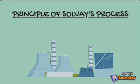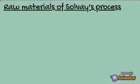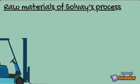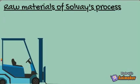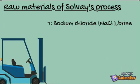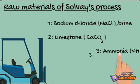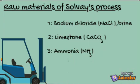The principle of Solvay's process is to manufacture sodium carbonate at low temperature. The raw materials that we need to start our industry are sodium chloride NaCl or brine, limestone CaCO3, and ammonia NH3. We shall provide all these things to the industry to manufacture the required product.